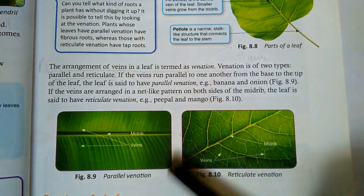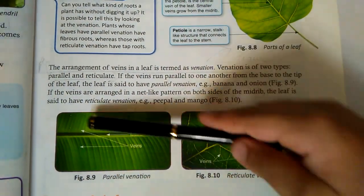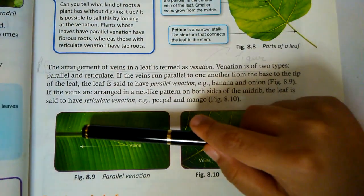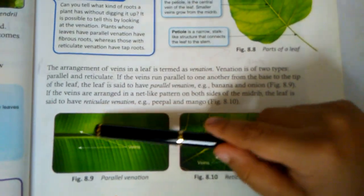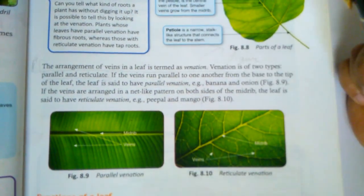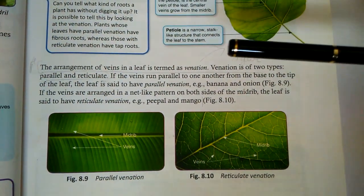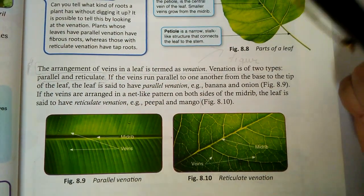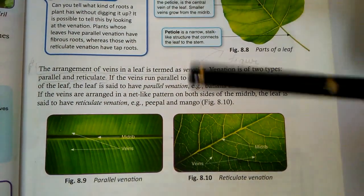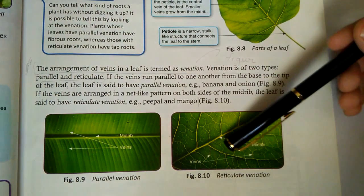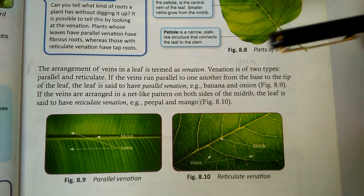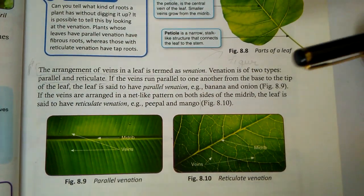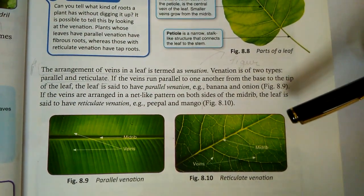Venation is of two types: parallel and reticulate venation. In parallel venation, the veins are parallel to each other — examples are banana and onion. In reticulate venation, the veins are not parallel — examples are mango and neem.